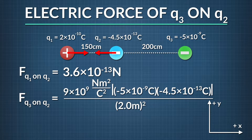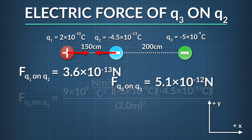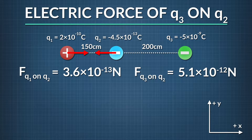We find the electric force magnitude of q3 on q2 is 5.1 times 10 to the negative twelfth newtons. Since q3 and q2 have the same sign, they push one another away. This means q3 pushes q2 in the negative x direction.